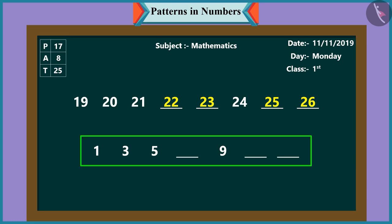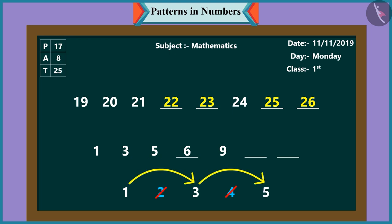Chutki, can you complete this pattern? Yes. In this pattern, six comes after five. Chutki, see the rules of this pattern. After one, it is not two, but three. After three, it's not four, but five. This pattern proceeds with alternate numbers.